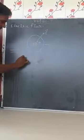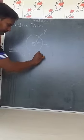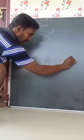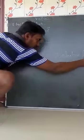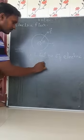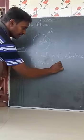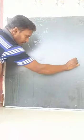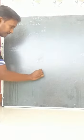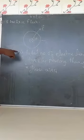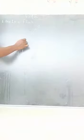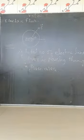Electric flux is defined as the total number of electric lines of force passing through a given area. This is known as electric flux. So it is defined as the total number of electric lines of force passing through a given area — this is known as electric flux.